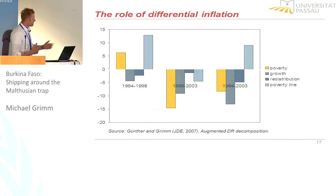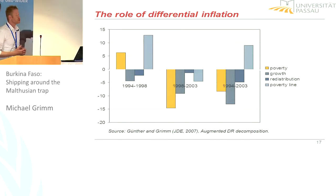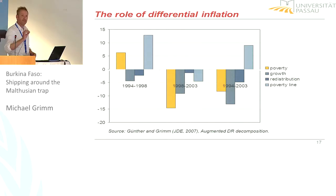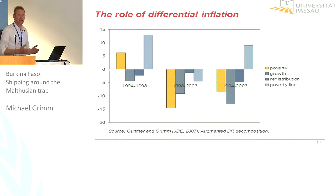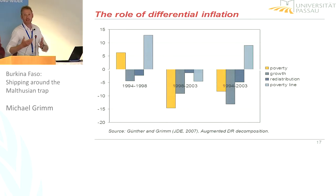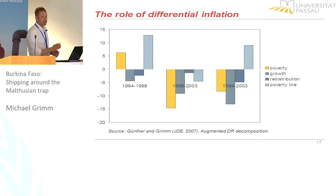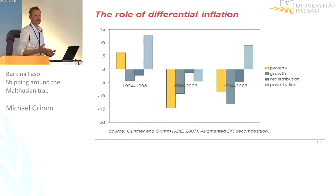Here's an exercise we did in a paper in the JDE, where we applied the Datt-Ravallion decomposition, decomposing a change in poverty into a growth component, a redistribution component, and a third component we call the poverty line component — Murray presented this yesterday for those who attended. What you see here is the poverty effect of a differential in the inflation of the poverty line relative to the CPI. It comes from a change in relative prices and the fact that the poor consume a different basket than the urban household underlying the CPI. Over the period 1994 to 2003, growth and redistribution in fact reduced poverty, but there is this huge poverty line effect — a large part of the potential poverty reduction was offset by an increase in the prices relevant to the poor. And that continues.